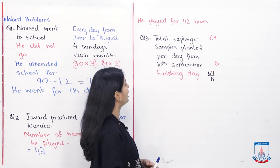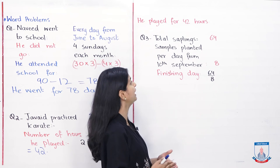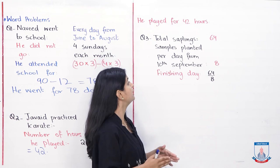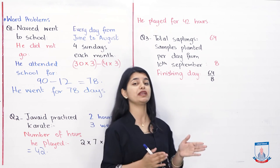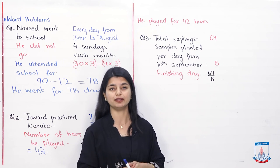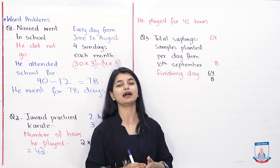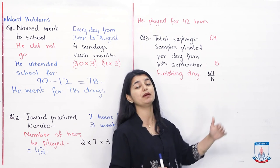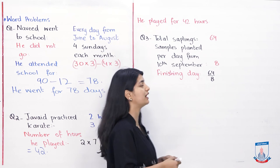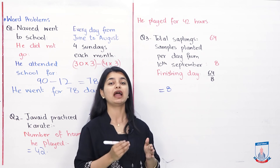Question 3: He has a total of 64 saplings — little plants — and he plants 8 saplings per day from 10 September. When we divide: 64 divided by 8 equals 8. So it will take 8 days. Now we count 8 days from September 10th to find when he finishes.